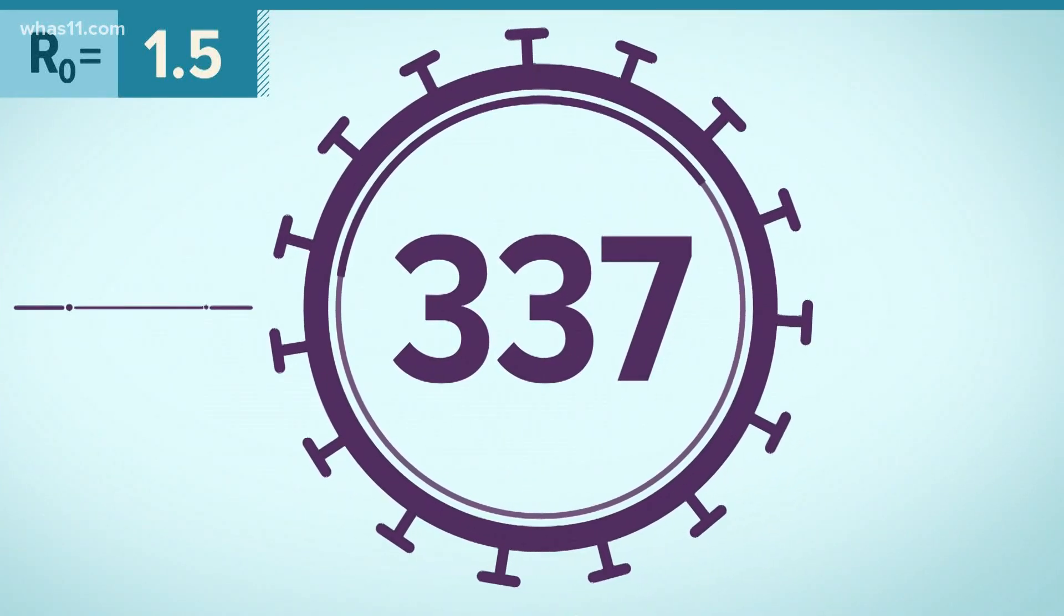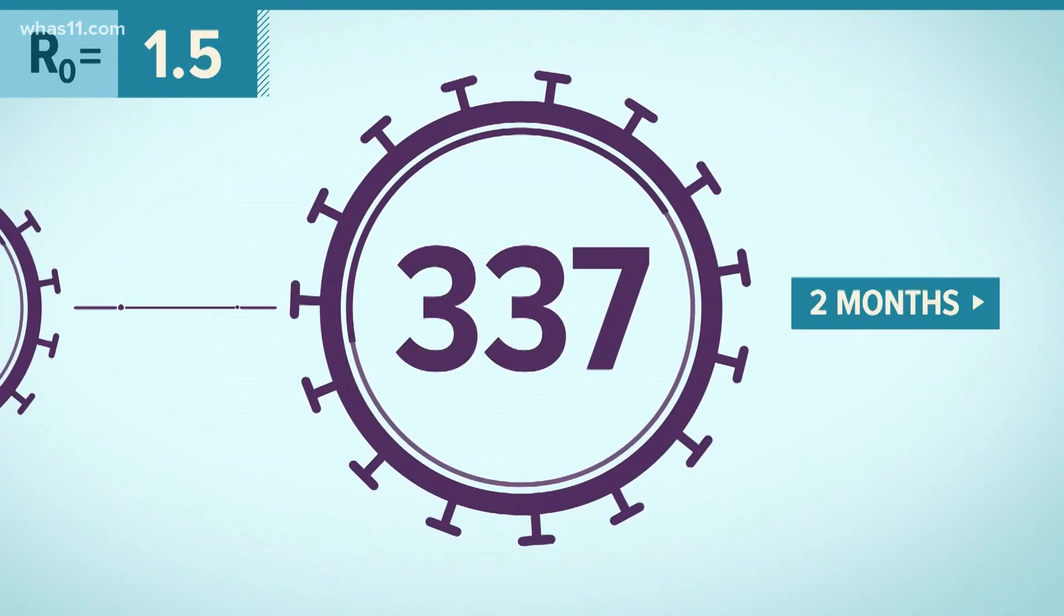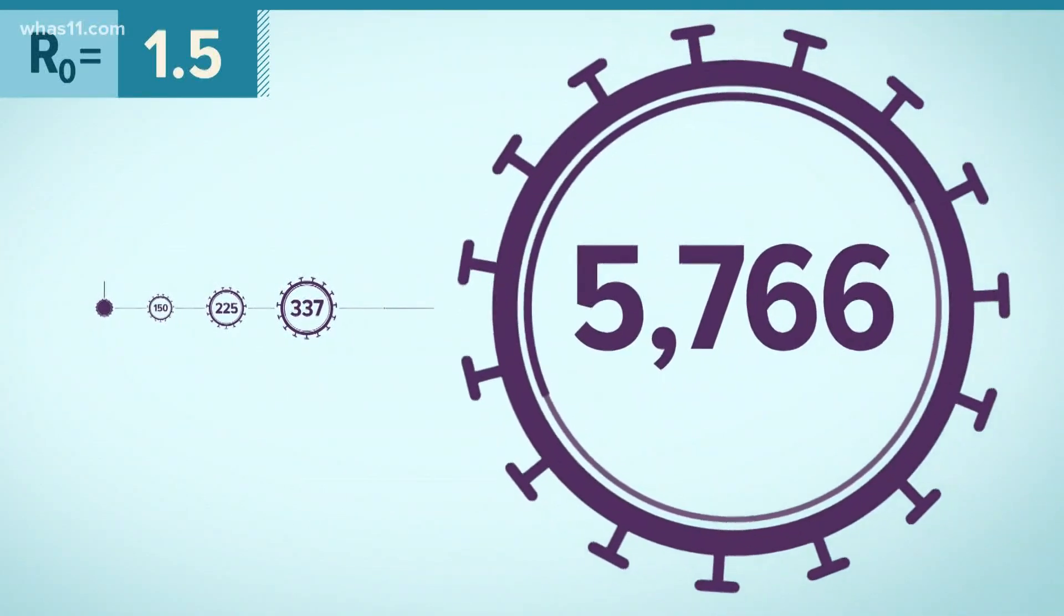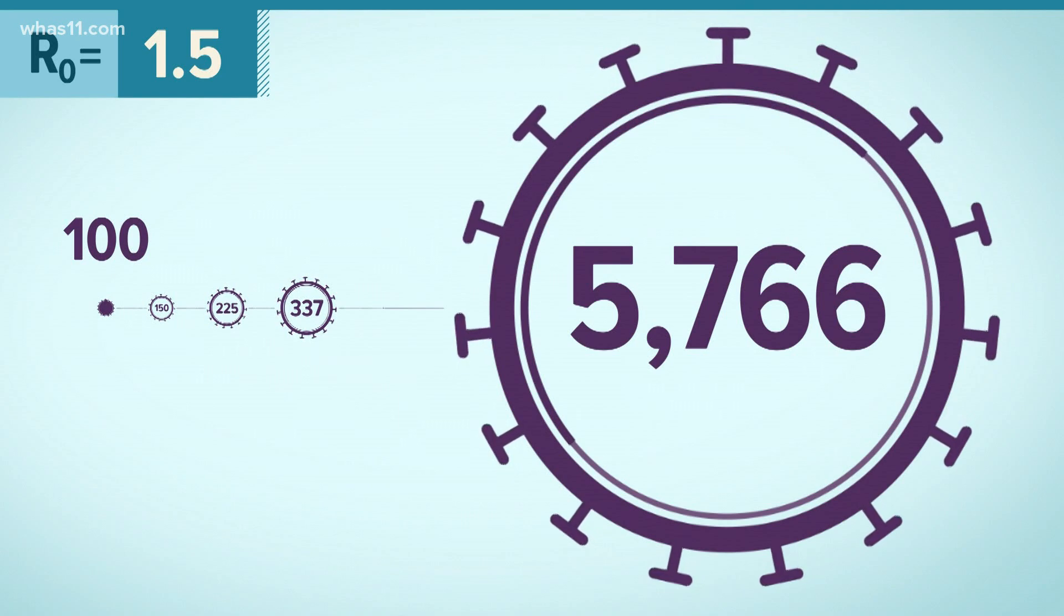So at this rate, by the 10th generation of the disease, or a little less than two months' time, the total number of newly infected people would rise from 100 to 5,766 people.